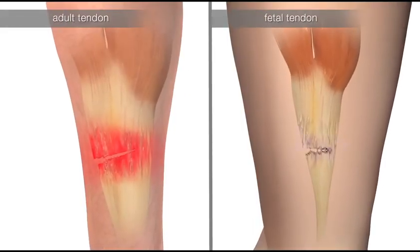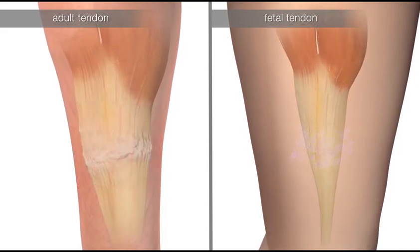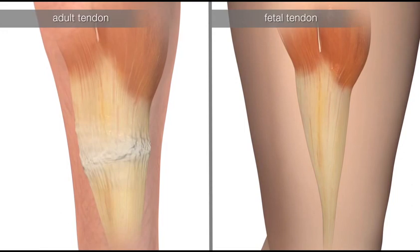Adults lack the regenerative biology present in fetal tissues. This leads to formation of scar and adhesion during adult wound healing.